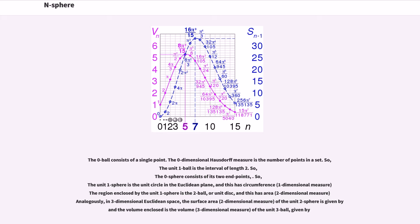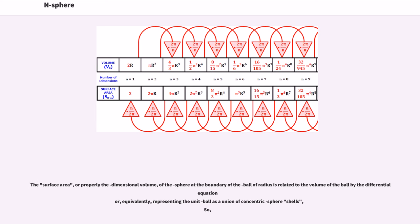In three-dimensional Euclidean space, the surface area of the unit two sphere is given by 4π, and the volume enclosed is the volume of the unit three ball. The surface area, or properly the dimensional volume, of the sphere at the boundary of the ball of radius r is related to the volume of the ball by a differential equation, or equivalently, by representing the unit ball as a union of concentric spherical shells.